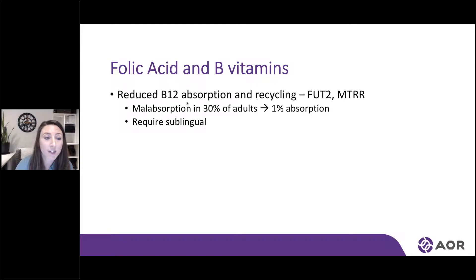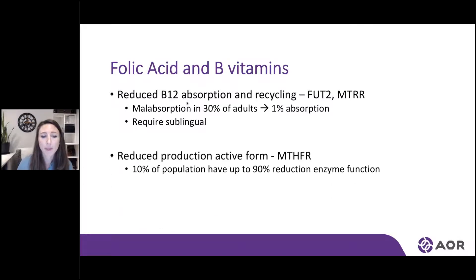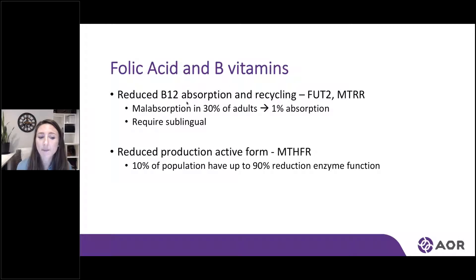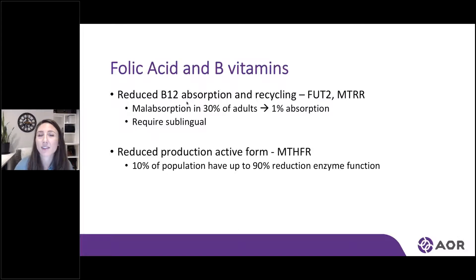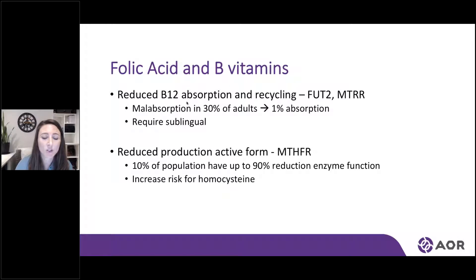By identifying this variant and the potential for deficiency, we know a higher dosage is required, but we can also change the form to sublingual for some individuals. Another gene related to folate metabolism called MTHFR actually reduces how effectively the body produces the active form of folate. In 10% of the population, there is up to a 90% reduction in enzyme function, which increases the risk for cardiovascular disease because the body can't utilize folic acid to help eliminate homocysteine. By identifying this early, we can test for homocysteine and look at providing the active form of folate — MTHF.